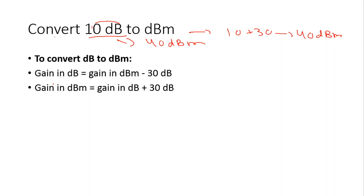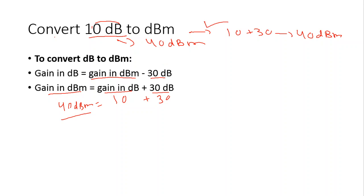To summarize the conversion formulas: if you are given gain in dBm and want gain in dB, subtract 30. If you are given gain in dB and want gain in dBm, add 30. As in our example, gain of 10 dB plus 30 gives 40 dBm, which is our answer.